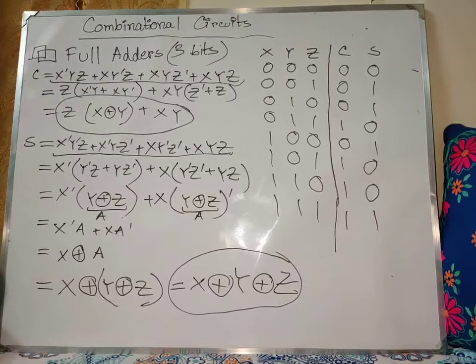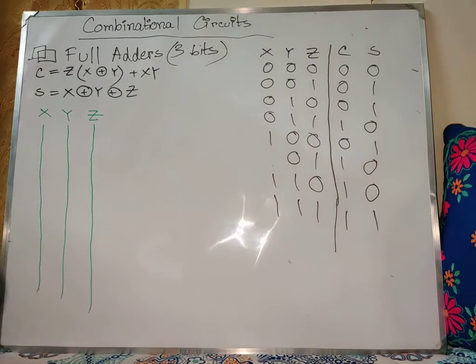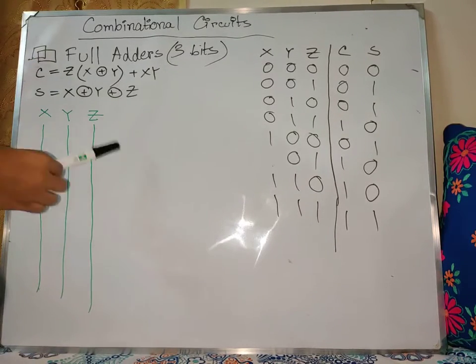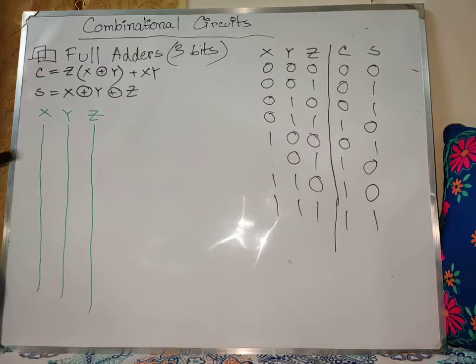So this expression is our full adder circuit equation, and we are going to draw the circuit for our 3-bit unit. The three inputs — we draw the circuit — are going to be x, y, z.